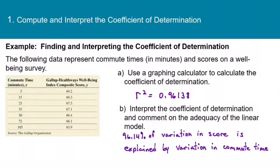So I'm going to say that our linear regression equation would do a very good job of predicting well-being scores if we put in a commute time that's in the range of 5 to 105.